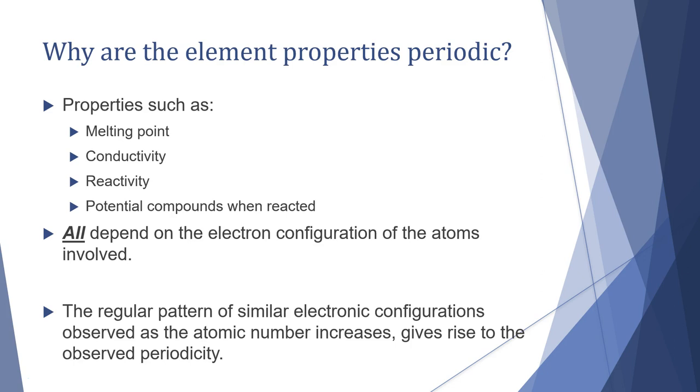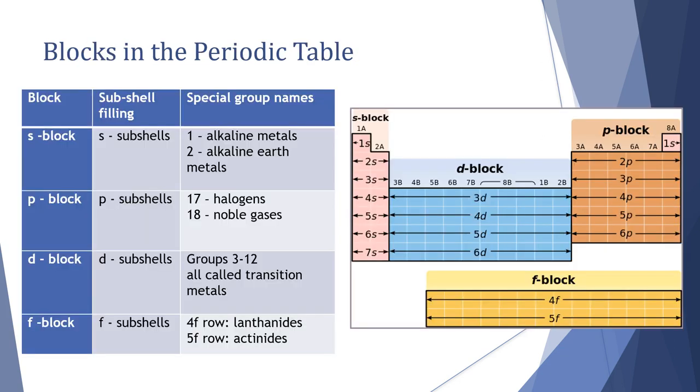The regular pattern of similar electronic configurations observed as the atomic number increases gives rise to the observed periodicity. The idea that shells build their way up to full going from one through to eight in the valence shell means that every eight we start that trend over again and we continue it until the next eight.